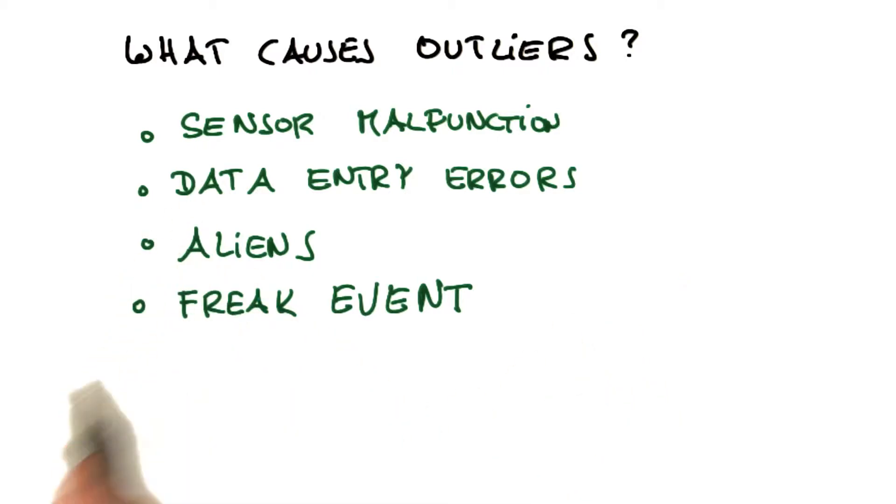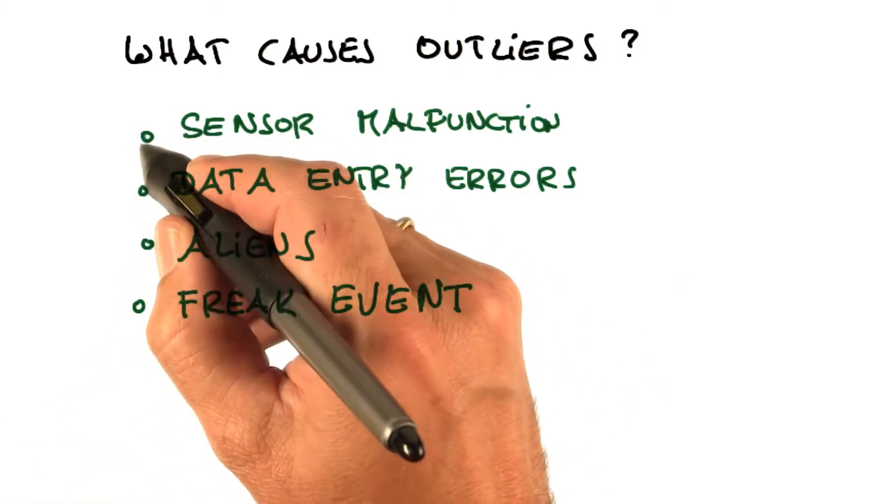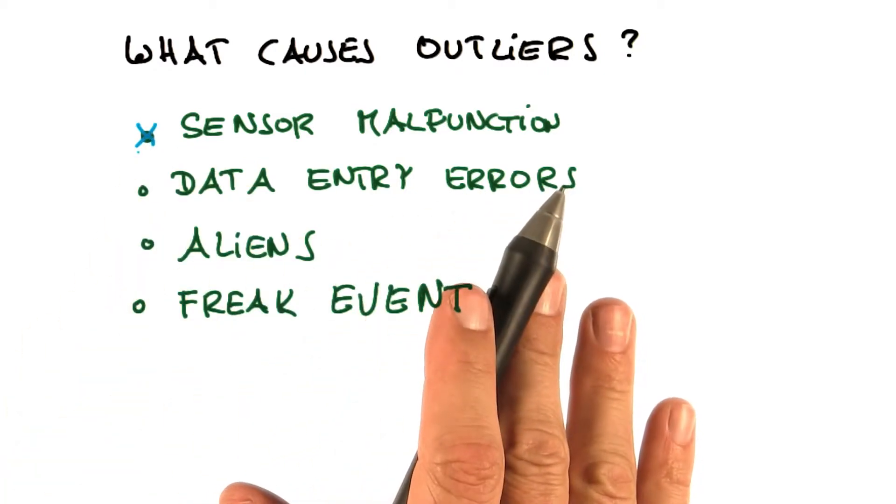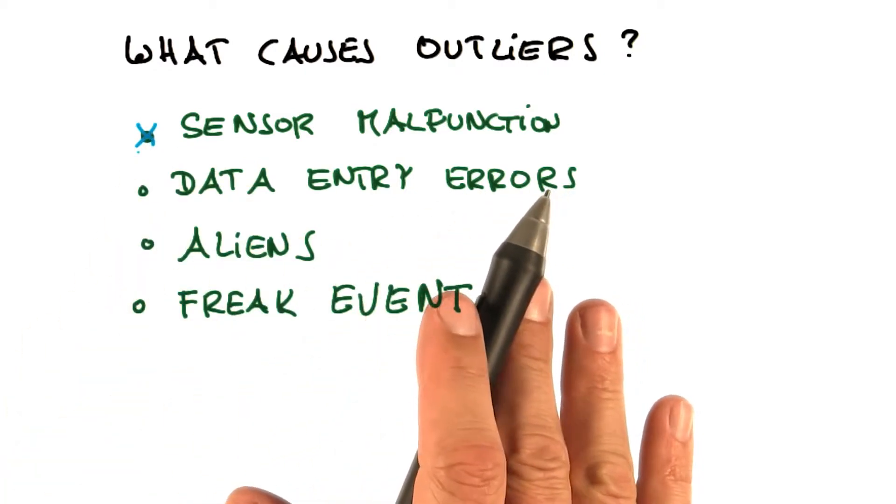And in this question, there's no best answer. I would say a very common one is sensor malfunction. So you often get sensors when they malfunction, they give you just zeros, and these zeros are often outliers.